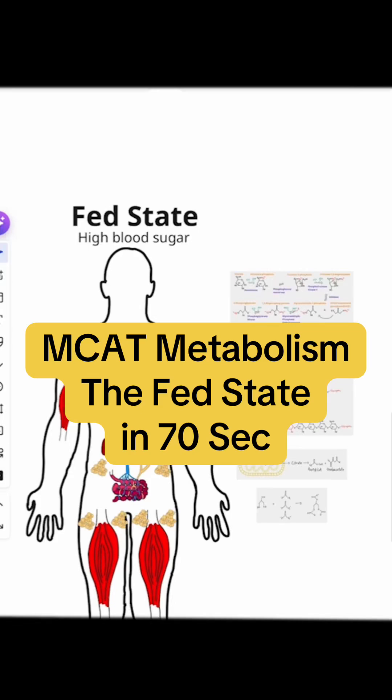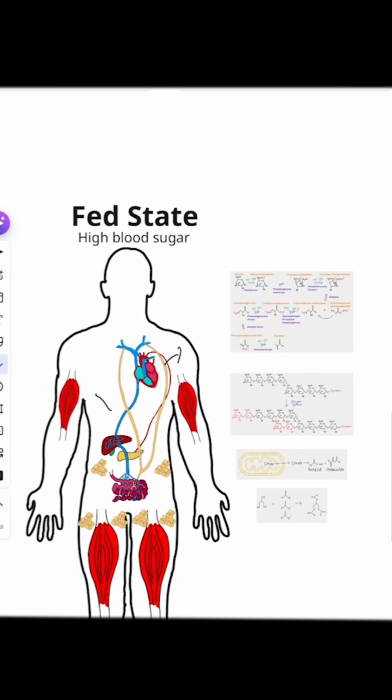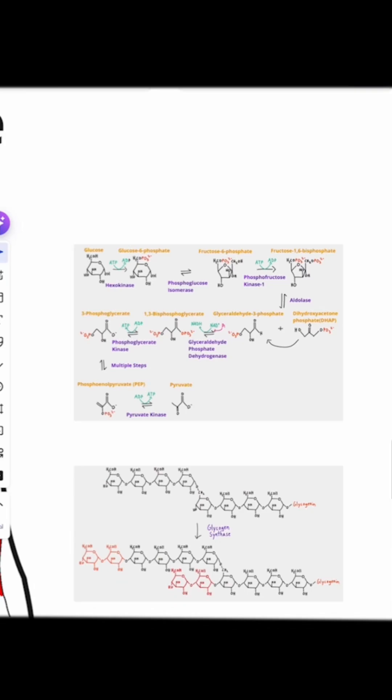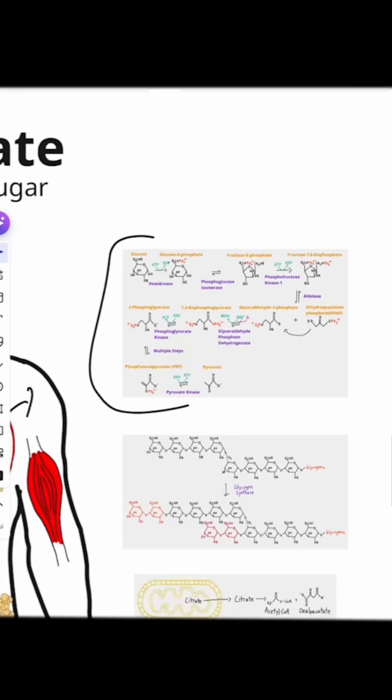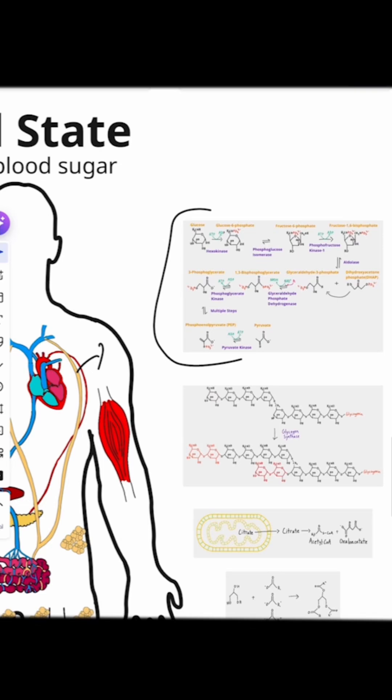During the fed state, the body has high blood sugar, and the sugar in the blood is going to go to the different organs of the body and be used through glycolysis to create energy. So the entire body is using glycolysis right now.